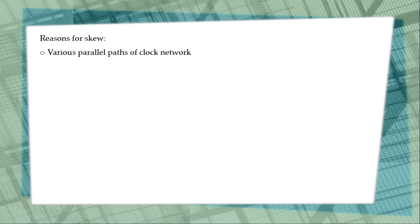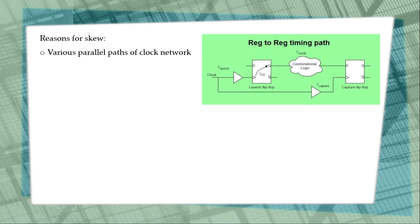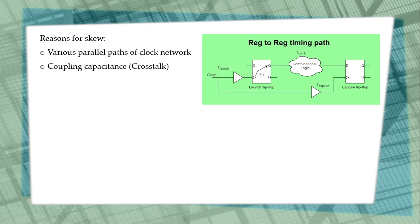Reasons for clock skew: various parallel parts of the clock network may not have the same clock delay. The clock path to the launch flip-flop may have a longer wire with more RC delay and buffer or inverter delay than the clock path to the capture flip-flop. A second reason is coupling capacitance — one path and another path may not have the same coupling capacitance, resulting in crosstalk and delta delay, causing variations in clock arrival time.